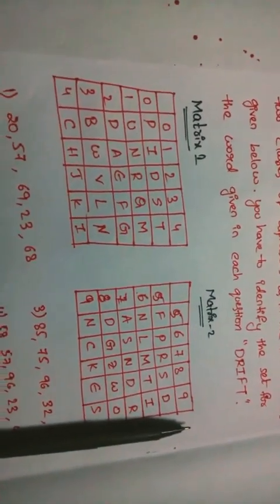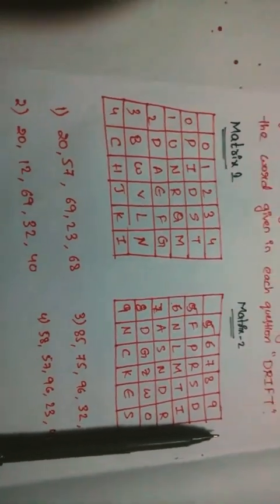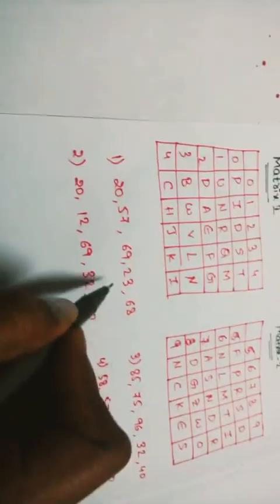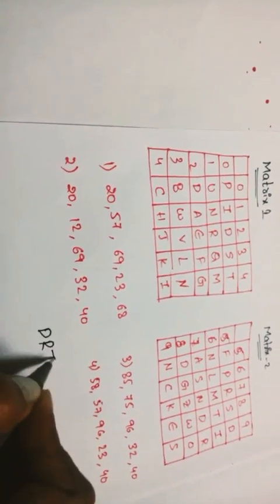First, let's define the two matrices. Matrix 1 has rows and columns with first numberings and letters mentioned. The question is how to find the code for a given word. We check each option by looking at the character set — using rows and columns from the two matrices.